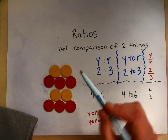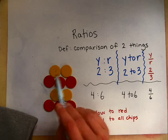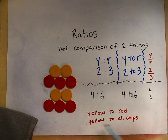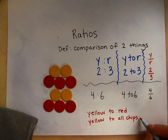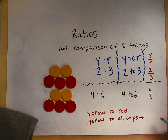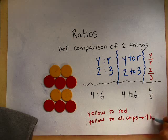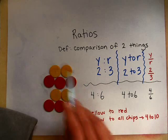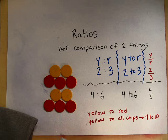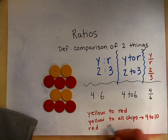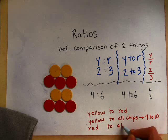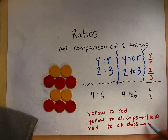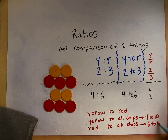But with ratios, you can be part to part. So red to yellow versus there are four yellow out of ten chips. So yellow to all chips would be four to ten. Because for every ten chips, you would have four yellow. And if you did red to all chips, your ratio would be six to ten.